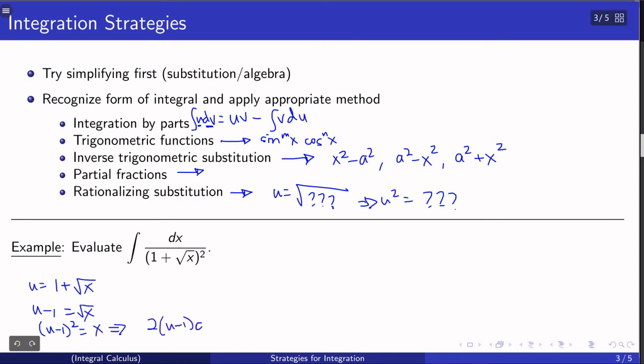Right? So the left side is 2 times u minus 1 du. The right side is just dx. And so what this allows me to do is, well, I don't have to worry about getting my integral into a form where I have my dx properly there. Because I just need the dx alone. And that dx becomes 2 times u minus 1 du.